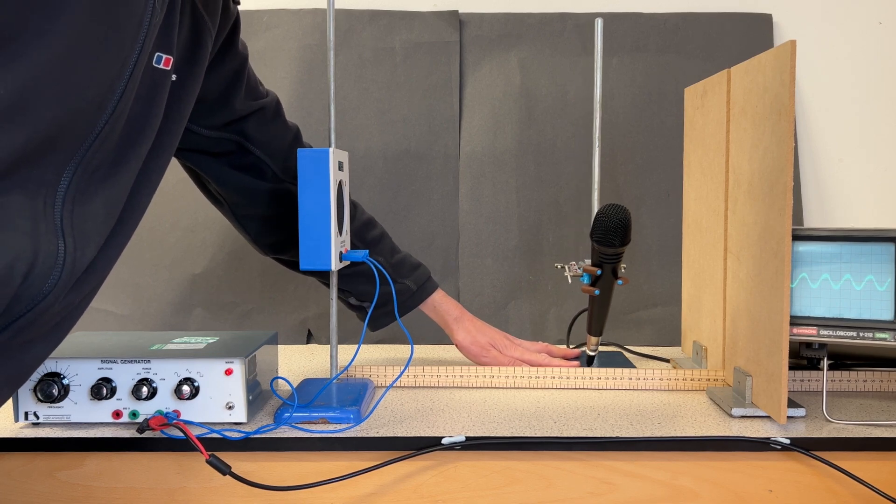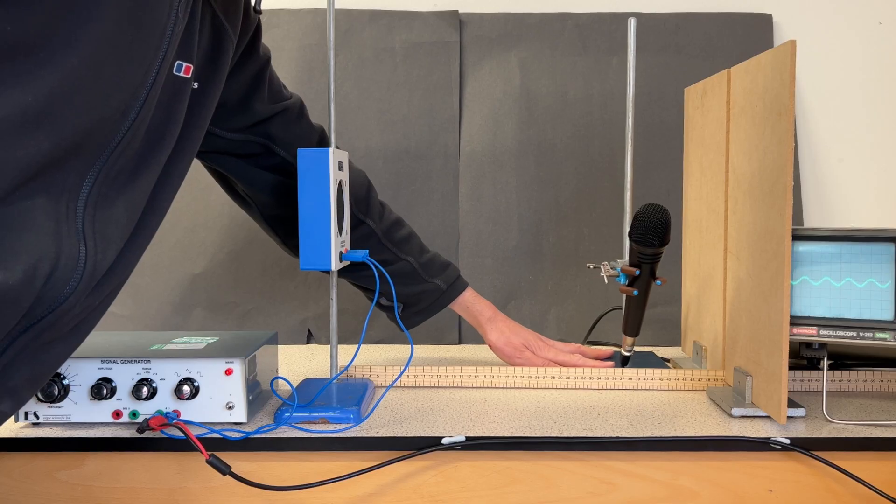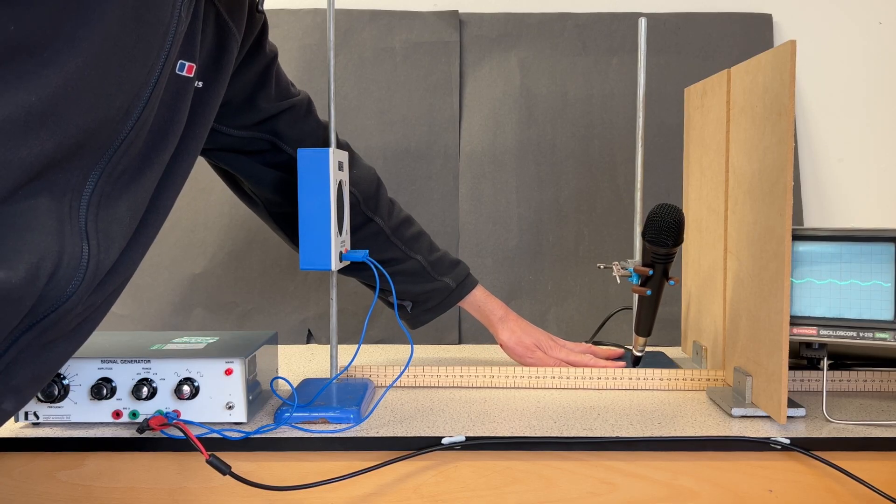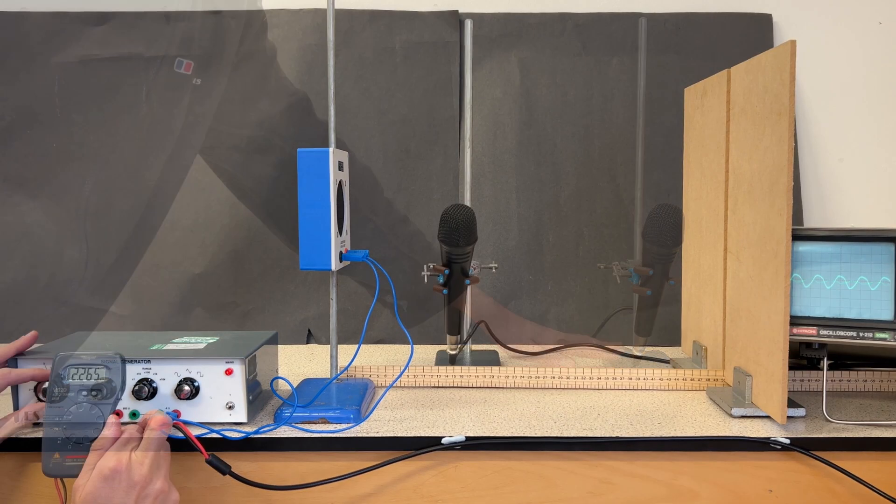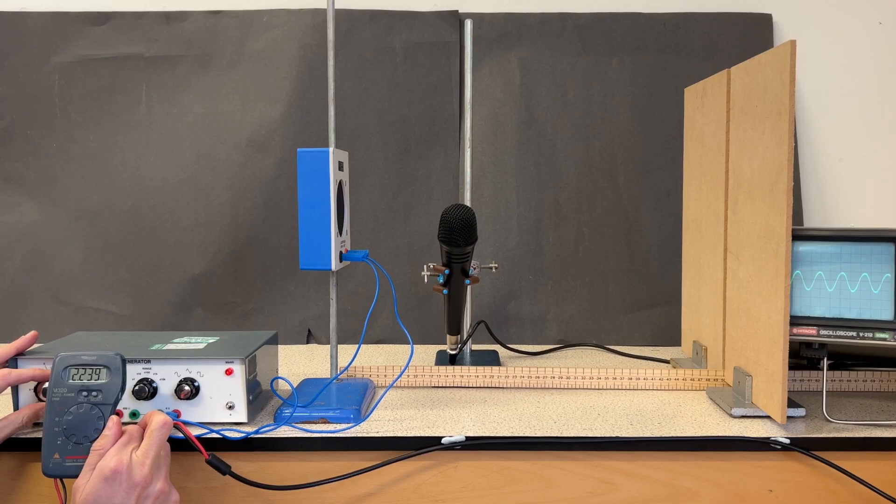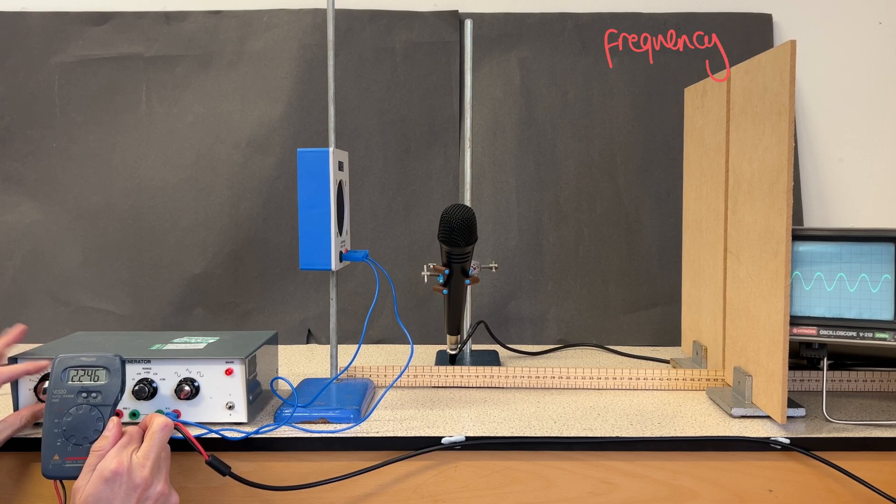I'm going to turn off the audio for the rest of the video so that you're not subjected to any more of the high-pitched squeak. I set the frequency on the signal generator to about 2250 Hz.